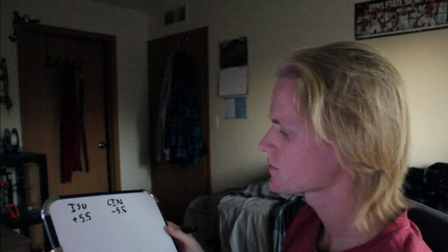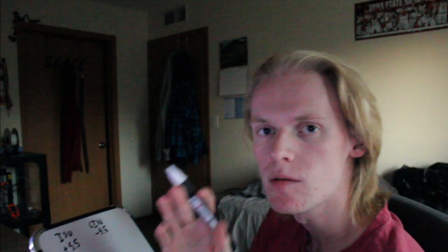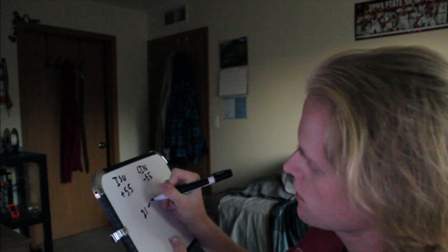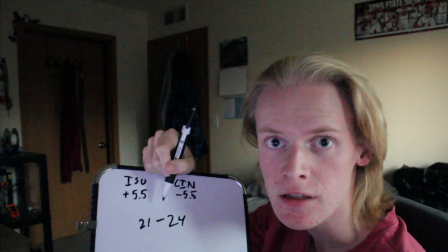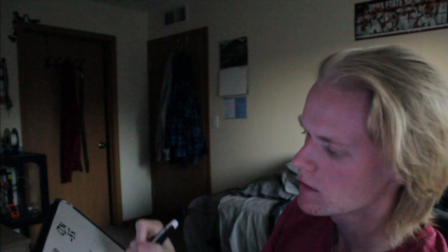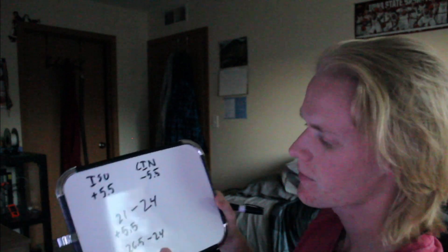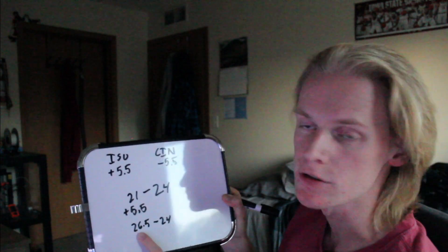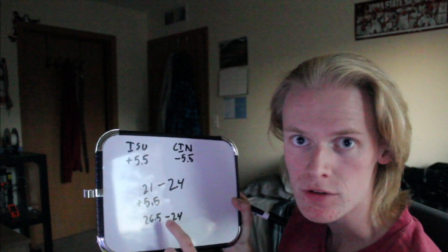Now let's show you the power of the spread. Say ISU lost the game overall 21 to 24. But you picked the plus five and a half, which brings their score to 26.5 to 24. So the result is still ISU winning the game after the spread manipulation.